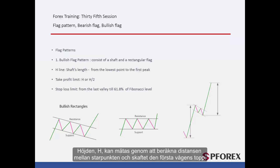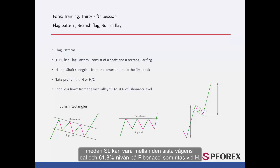Height can be measured by calculating the distance between the starting point on the shaft and the peak of the first wave. TP price would be H and H2 pips above a breakout point or a valley of the last wave, while SL can be between the valley of the last wave and the 61.8% level of the Fibonacci drawn on H.